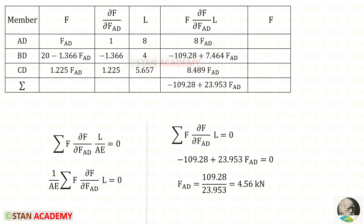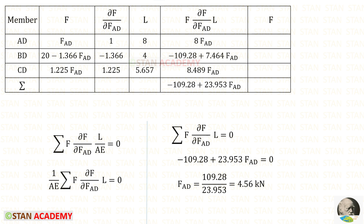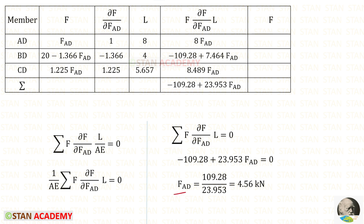From the previous numerical, we know the formula being used in the strain energy method analysis of trusses. Nothing is mentioned about the area and Young's modulus in the question, so we can assume both are common for all members — we can take AE on the other side. 0 into AE equals 0. Applying this, for FAD we will get 4.56 kN.